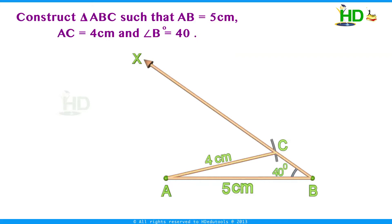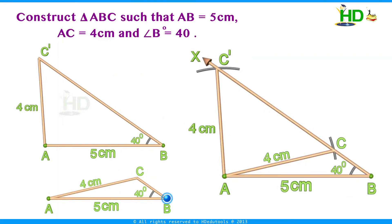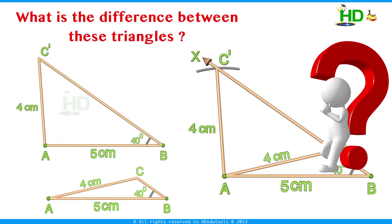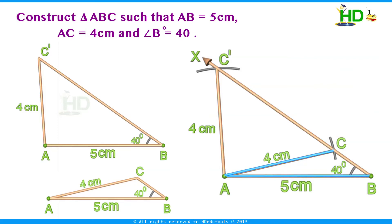One important thing here: from A you can draw two arcs — at C and C prime, as seen in the figure. The arc from A of radius 4 cm cuts ray BX twice. If you take this point as C, you get another triangle. So in this case, with the same measurements, we may have two triangles. The difference between these two triangles is: in one case angle A is less than 90 degrees, and in the other angle A is more than 90 degrees. In one triangle angle C is greater than 90 degrees (obtuse), and in the other angle C prime is less than 90 degrees (acute).